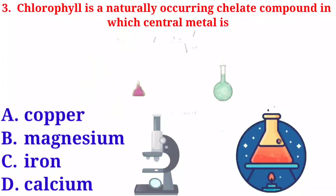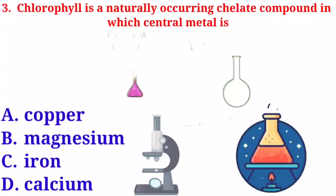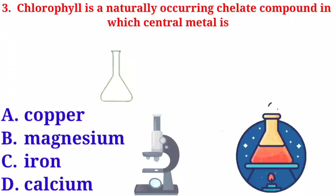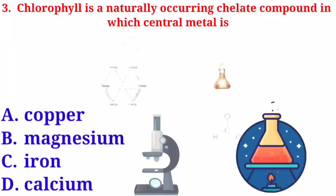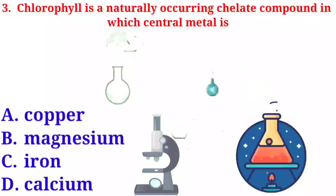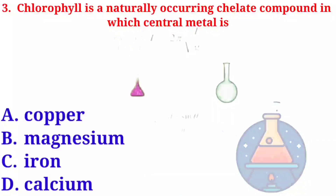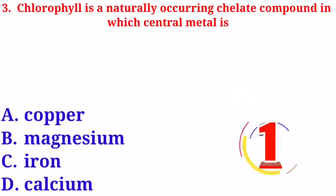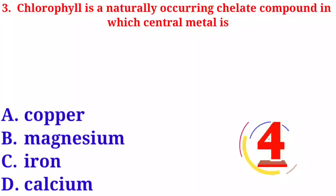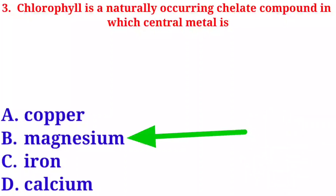Question number three: chlorophyll is a naturally occurring chelate compound in which the central metal is — option A: copper. Option B: magnesium. Option C: iron. Option D: calcium. The correct answer is option B, magnesium.